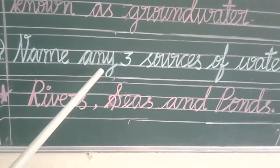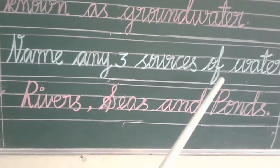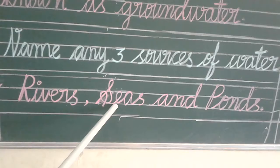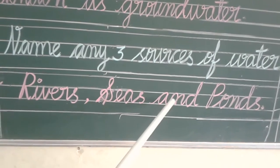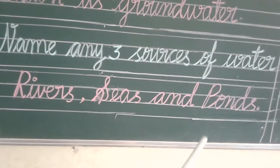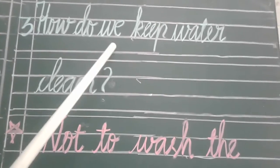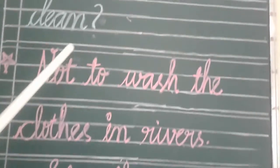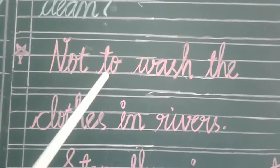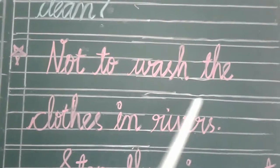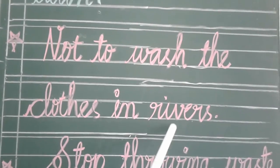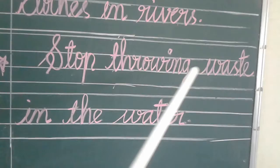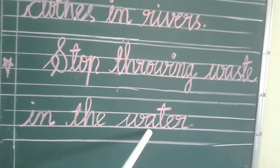Name any three sources of water. Rivers, seas, and ponds. How do we keep water clean? Do not wash clothes in rivers. Stop throwing waste in the water.